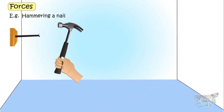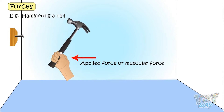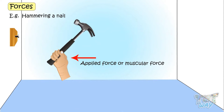While we are hammering a nail, applied force or muscular force is pushing the nail into the wall. And friction is opposing the movement.